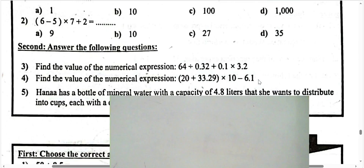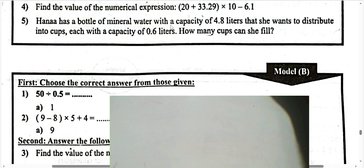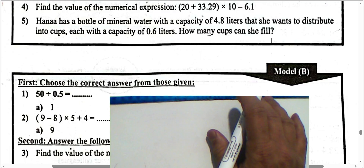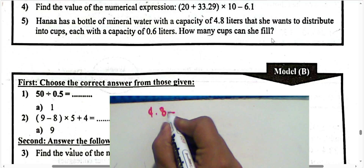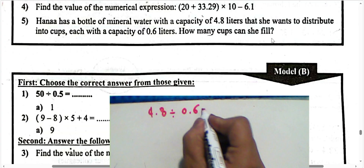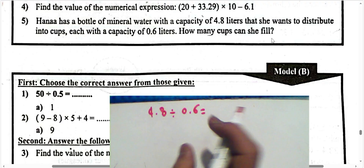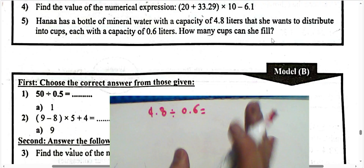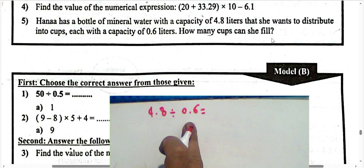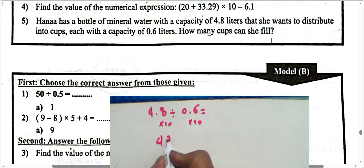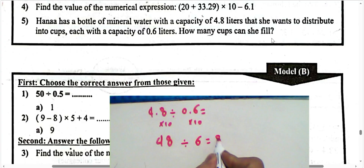Next, question number 5: someone has a bottle of mineral water with a capacity of 4.8 liters that she wants to distribute into cups of 0.6 liters each. How many cups can she fill? Number of cups equals total amount divided by cup size: 4.8 divided by 0.6. Multiply by 10 to convert the decimal divisor: 48 divided by 6. The result is 8 cups.